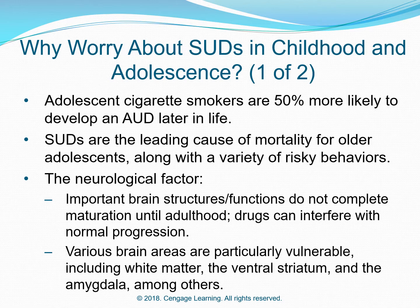The neurological factor: Important brain structures and functions do not complete maturation until adulthood. Drugs can interfere with normal progression. Various brain areas are particularly vulnerable, including white matter, the ventral striatum, and the amygdala, among others.